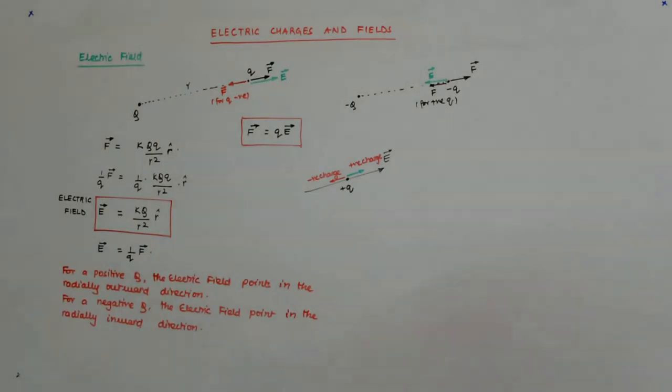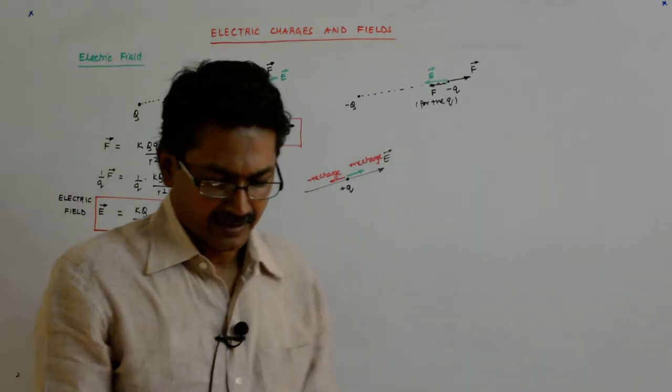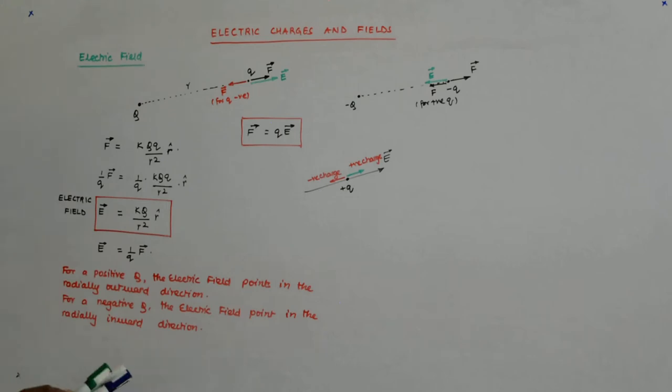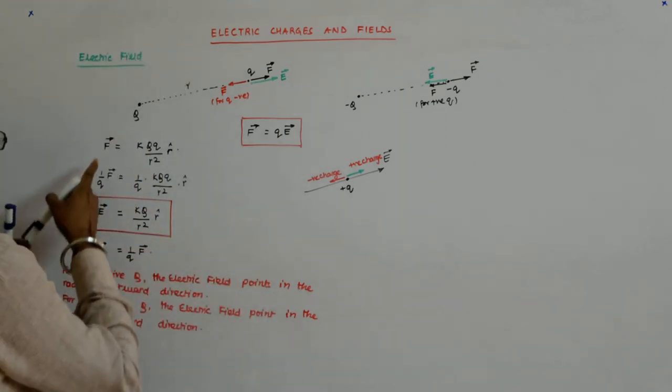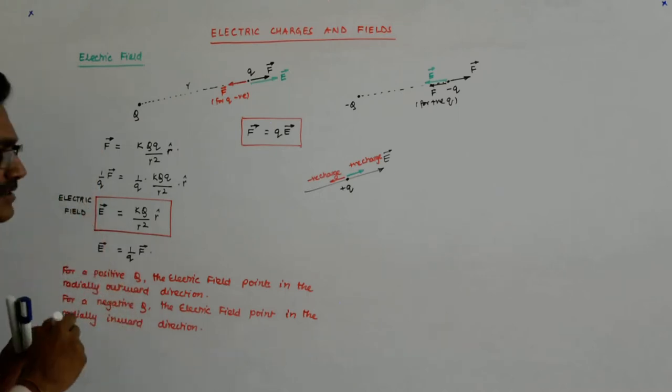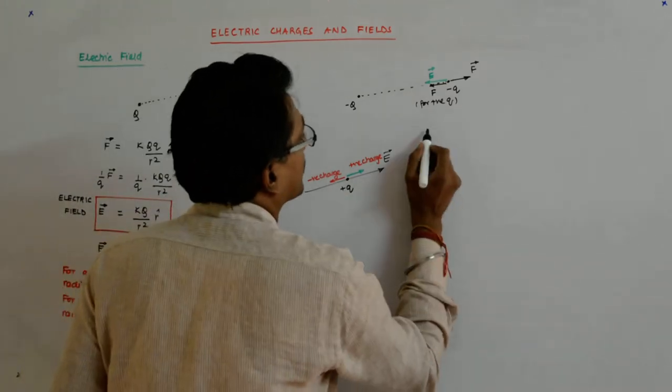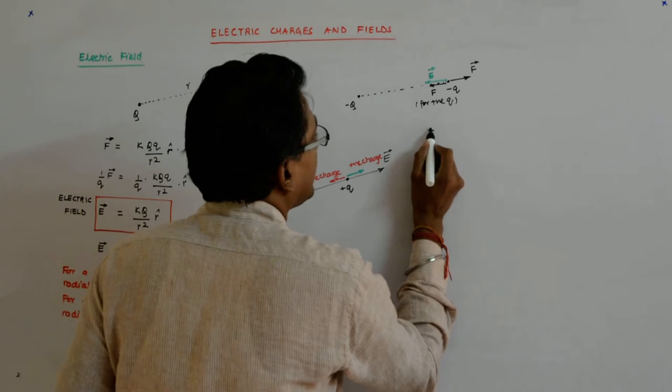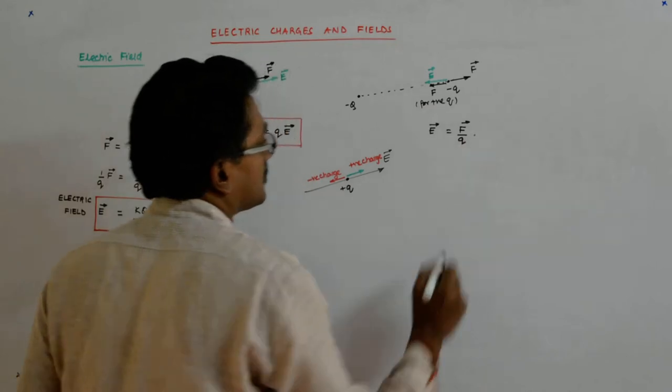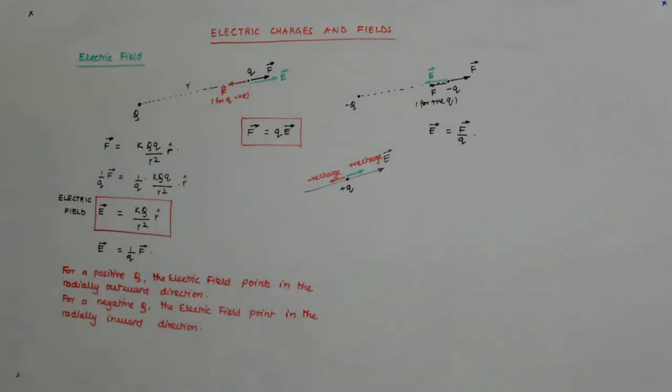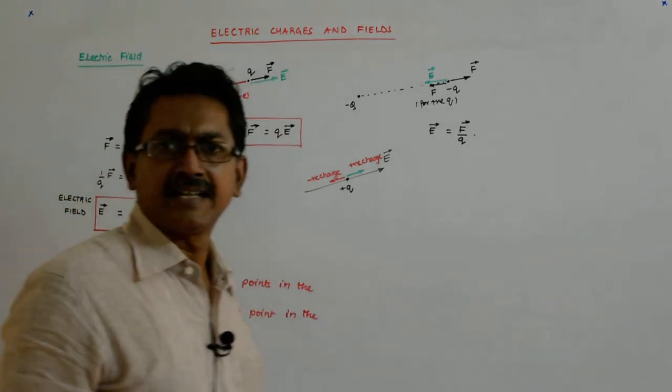Now, so it tells me something. It tells me that the electric field E is F upon Q. Now what does that mean? Let's try to understand. E is equal to F upon Q. So what does it tell me?